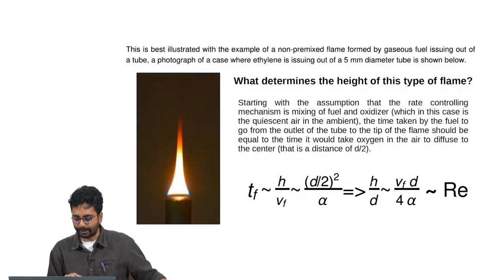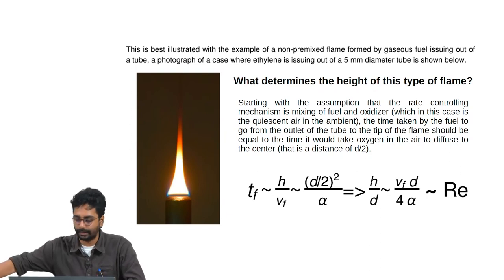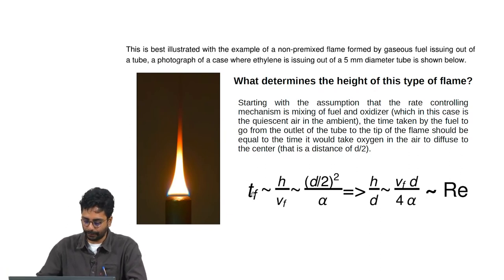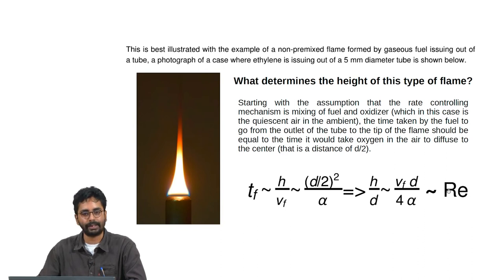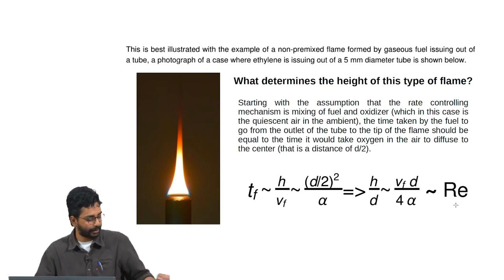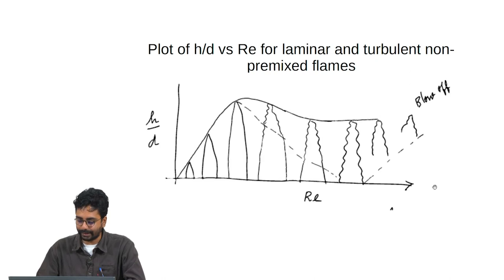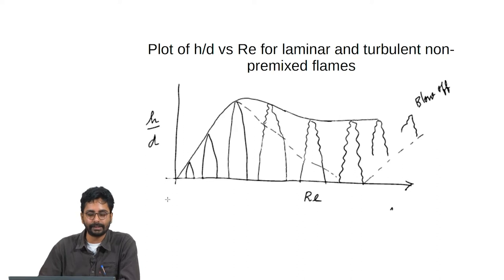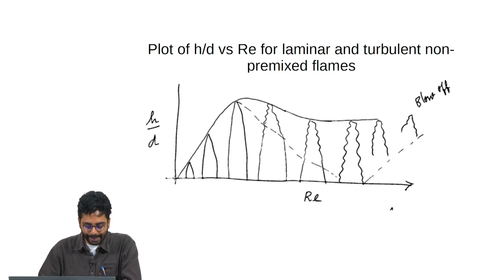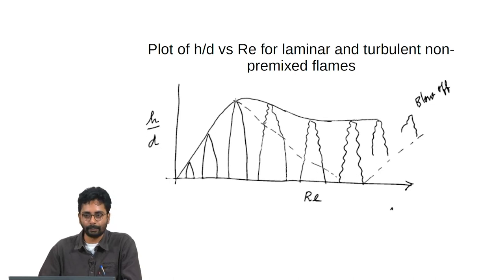Summarizing: the time for fuel to travel is h/Vf, matched by the diffusion time, implying the non-dimensional height goes as the Reynolds number (or Re/4). Experimental results indeed show that when h/d is plotted as a function of Reynolds number, in the laminar regime h/d increases linearly with Reynolds number, as expected from the scaling analysis, until some threshold Reynolds number.